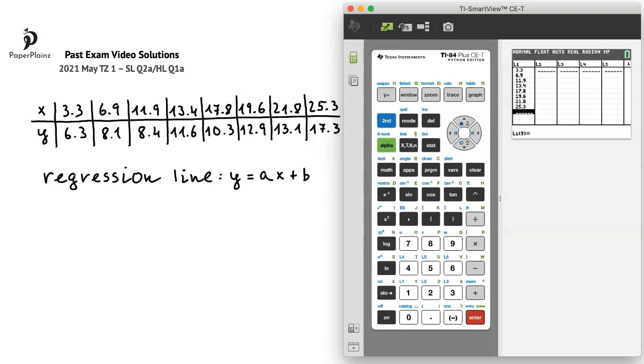After entering the x values, we'll move over to list 2 and enter the y values. So we get 6.3, 8.1, and so on.